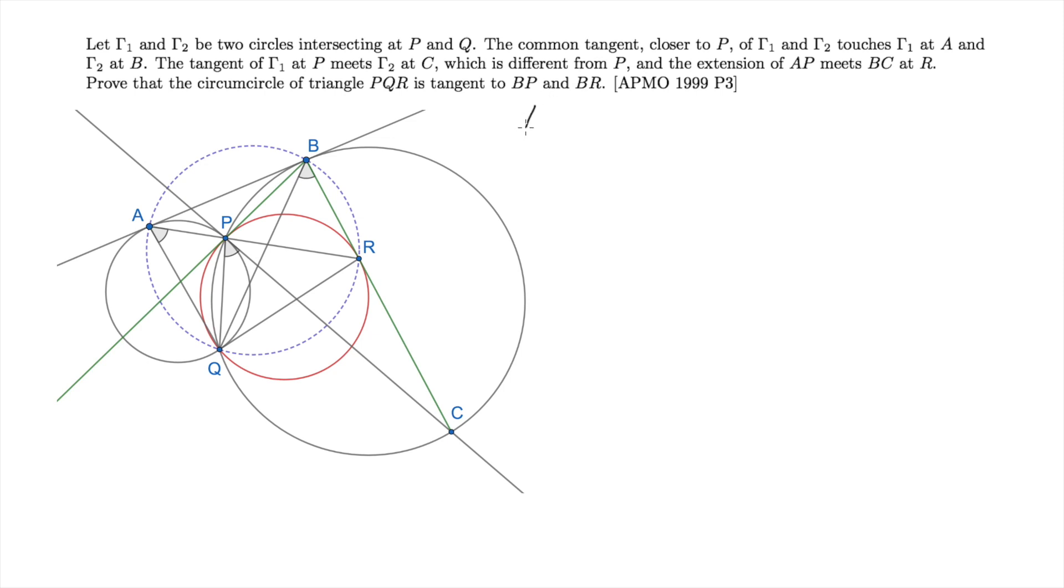As in the first problem, we start by remarking some concyclic points. Here, we will prove that A, B, R, Q are concyclic. So let's perform the angle tracing.